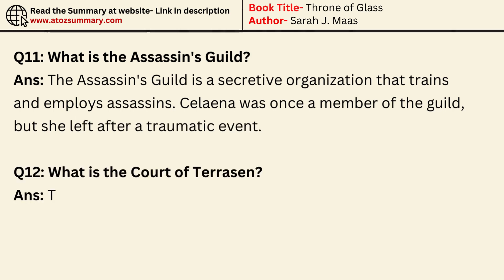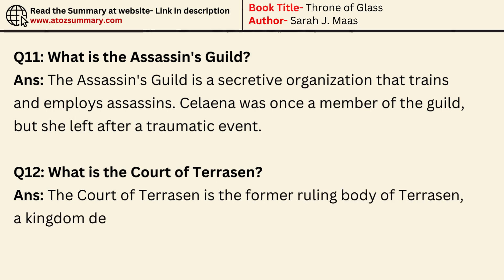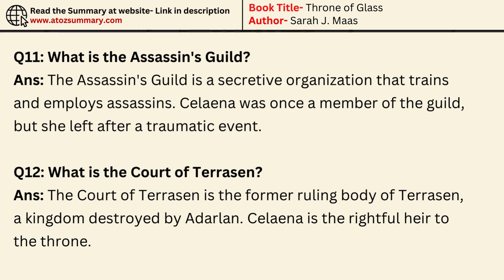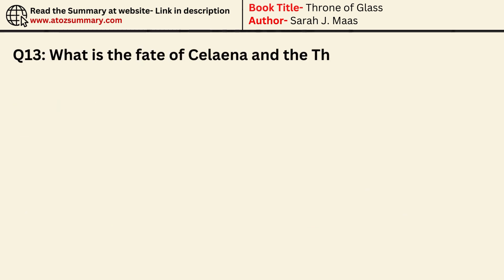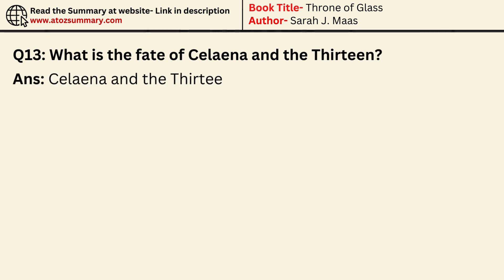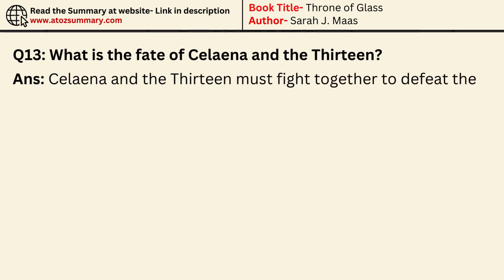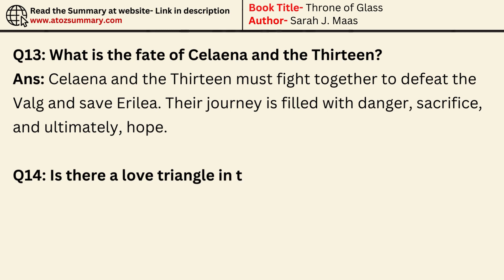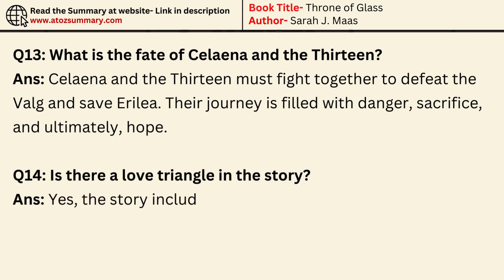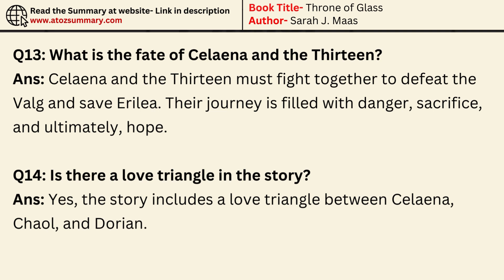What is the Court of Tarasun? The Court of Tarasun is the former ruling body of Tarasun, a kingdom destroyed by Adarlin. Selina is the rightful heir to the throne. What is the fate of Selina and the Thirteen? Selina and the Thirteen must fight together to defeat the Valg and save Irelia. Their journey is filled with danger, sacrifice, and ultimately hope. Is there a love triangle in the story? Yes, the story includes a love triangle between Selina, Kale, and Dorian.